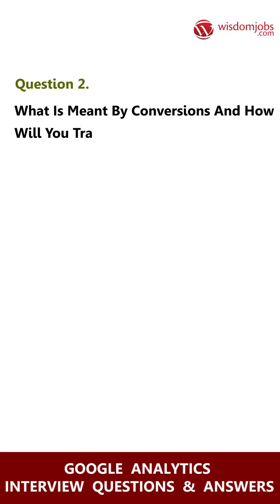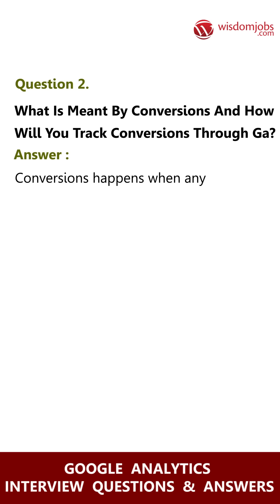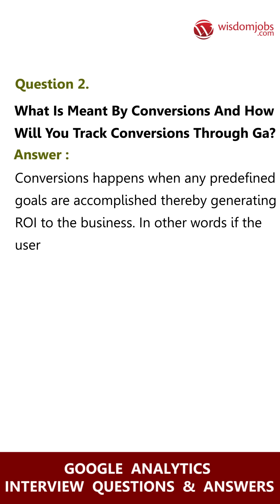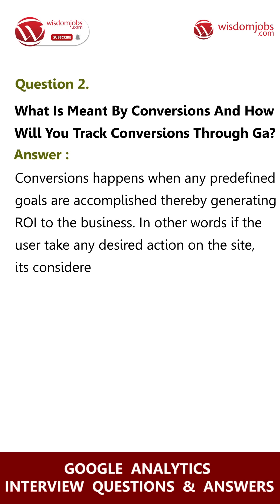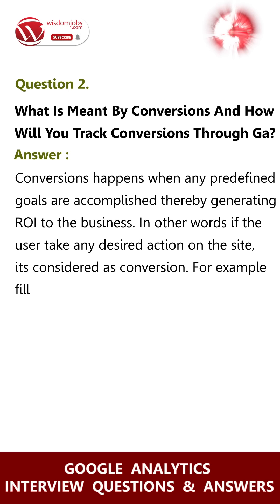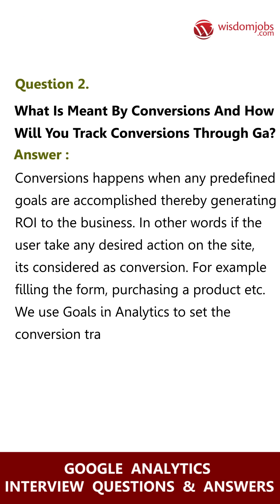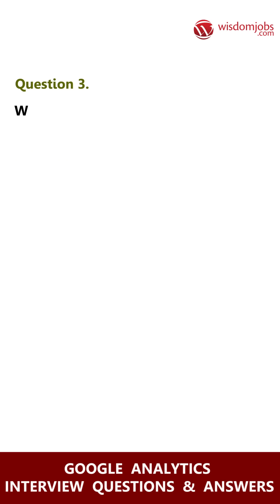Question 2: What is meant by conversions and how will you track conversions through Google Analytics? Answer: Conversions happen when any predefined goals are accomplished, thereby generating ROI to the business. In other words, if the user takes any desired action on the site, it is considered a conversion — for example, filling a form or purchasing a product. We use goals in analytics to set the conversion tracking.